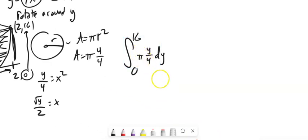All right, the pi and the 4 can come out, those are constants. And you know how to do the rest of that. You end up with 32 pi.